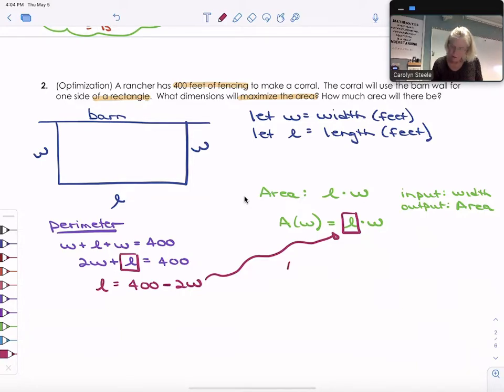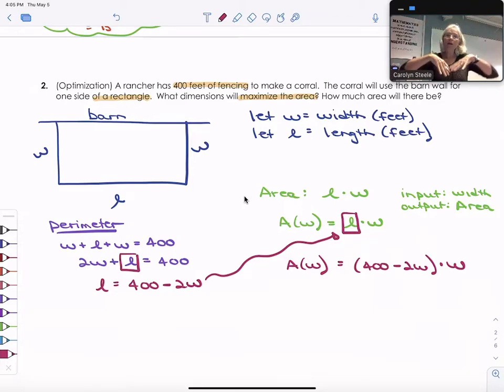And now I can substitute it in for my length here. So now I know a of w is equal to 400 minus 2w times w. And now I have a function where I'm going to input width. And it's going to output area. I'm going to do a little bit of work just to simplify this equation. So I know a of w.